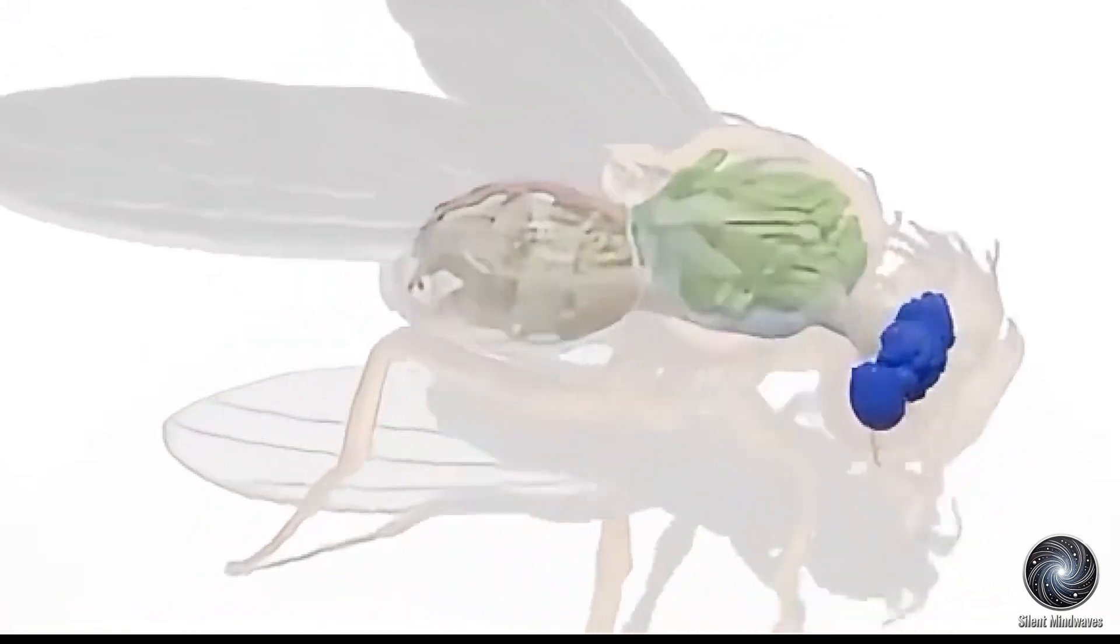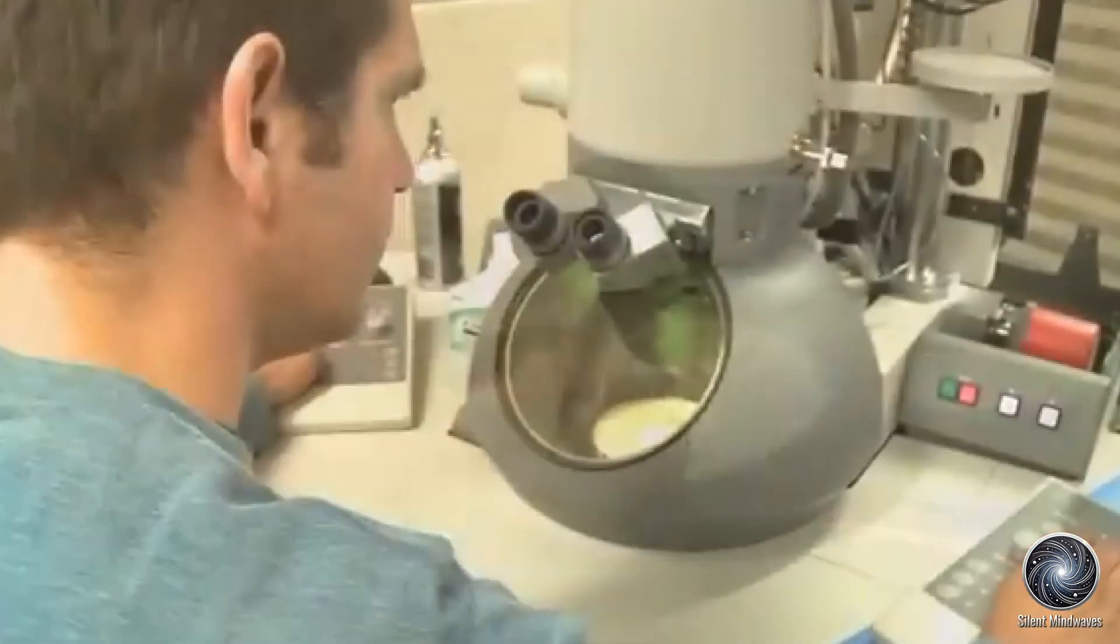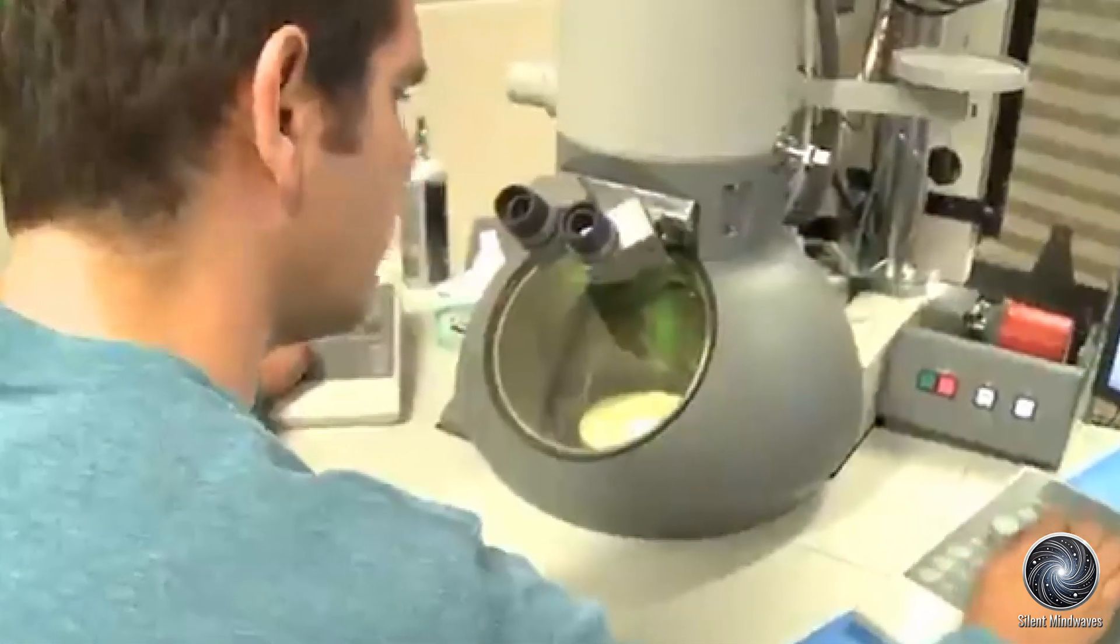The story of this remarkable achievement dates back to 2013 at the Howard Hughes Medical Institute in Maryland, where neuroscientist Davi Bach and his team began preserving the brain of an adult female fruit fly. The brain was placed in a chemical solution designed to protect its structure for future analysis. This process took five years, during which the researchers prepared the brain for what would become the most comprehensive mapping effort ever attempted.